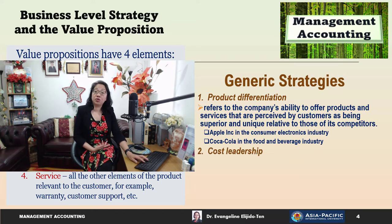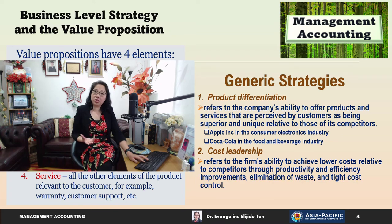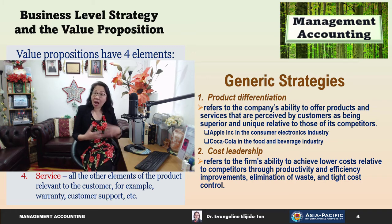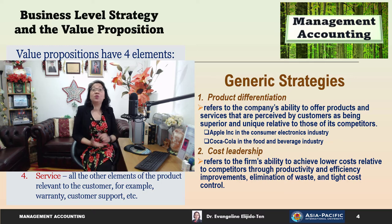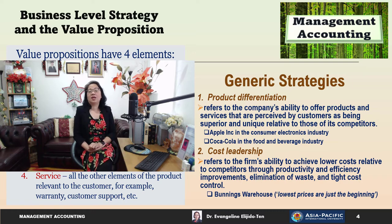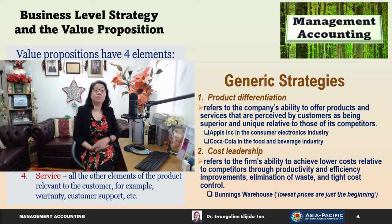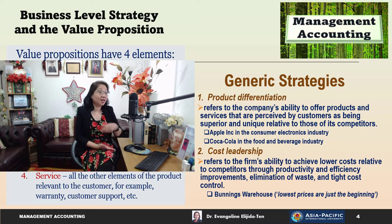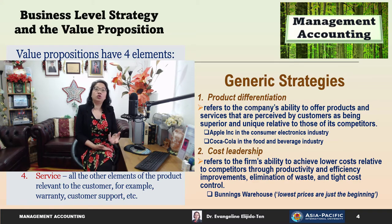The second generic strategy is cost leadership, which refers to the firm's ability to achieve lower costs relative to competitors — through productivity and efficiency improvements, elimination of waste, and tight cost control. Here in Australia, we have Bunnings Warehouse, which provides hardware, gardening tools, and materials. Their motto is 'lowest prices are just the beginning — if you find it cheaper elsewhere, we will beat it by 10%,' which clearly shows that Bunnings Warehouse is using cost leadership.